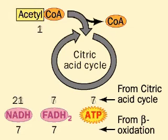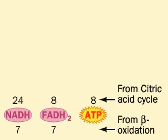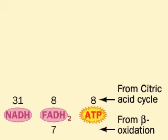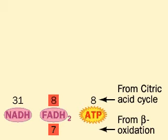Let's add them up. NADH from beta-oxidation: seven, and from the citric acid cycle: 24, or 31 total. FADH2 from beta-oxidation: seven, and from the citric acid cycle: eight, or 15 total.